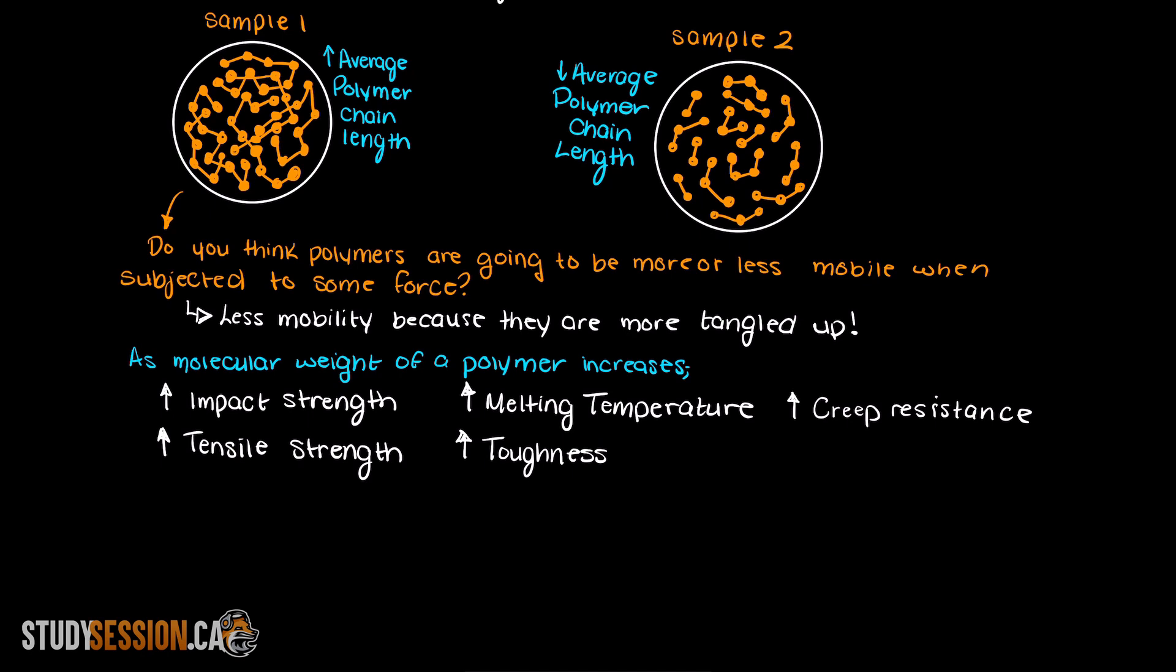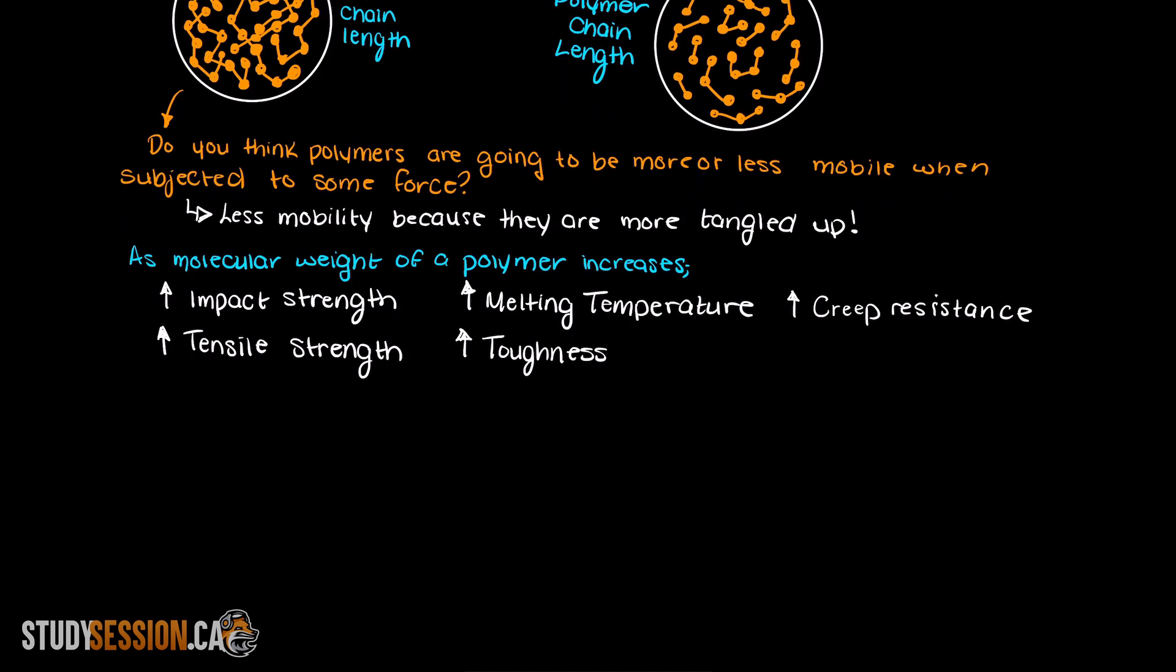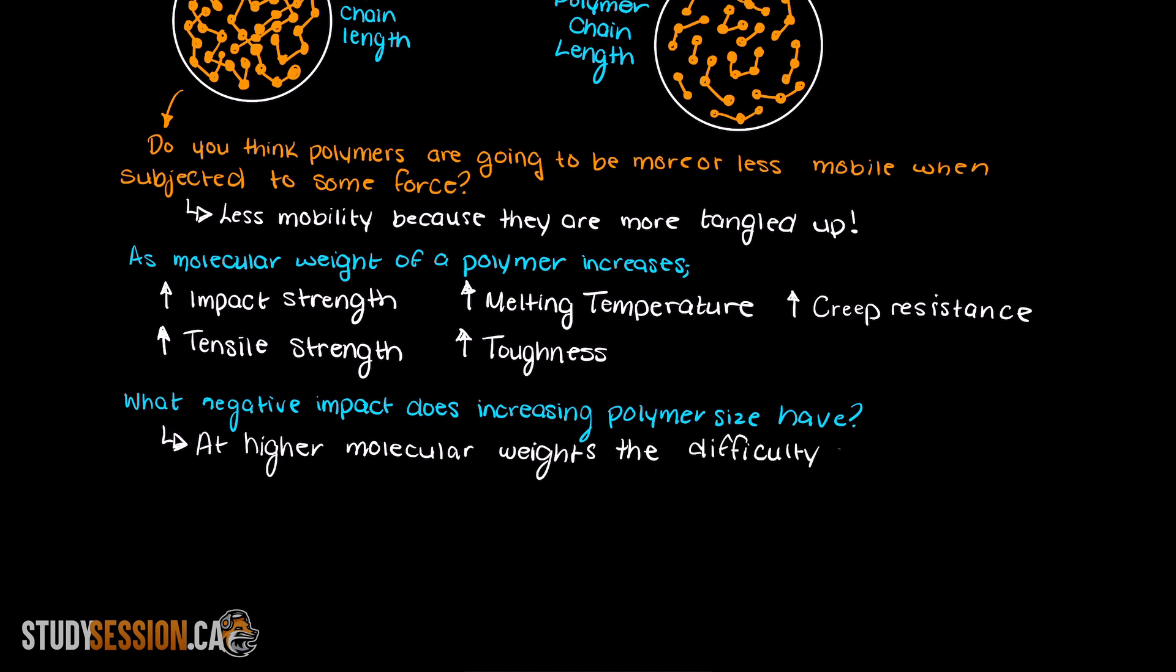Although many of the aforementioned properties are great for many applications, there are some disadvantages to larger molecular weight polymer samples. As the molecular weight of our polymer samples increase, the difficulty in processing them increases as they are much less mobile and harder to manipulate. The reasoning for this is the viscosity of the polymer increases with chain length, therefore we can more easily process lower molecular weight polymers.